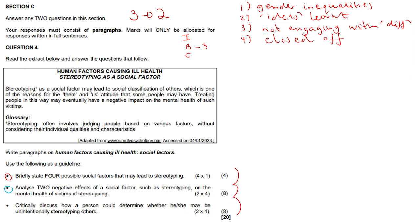Analyze two negative effects of a social factor such as stereotyping on the mental health of victims of stereotyping. So it's eight marks here - we need a bit more meat on our bone. Using a different color, writing it in the middle: two negative effects. Well, victims of stereotyping develop negative self-esteem.